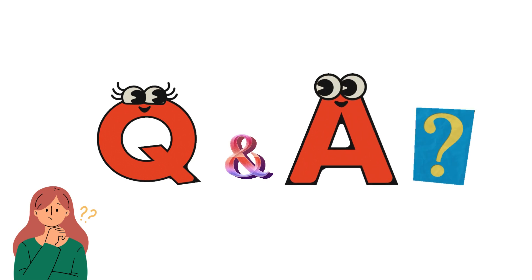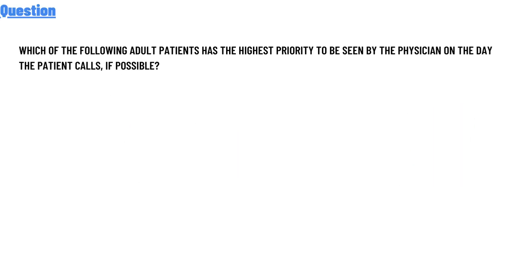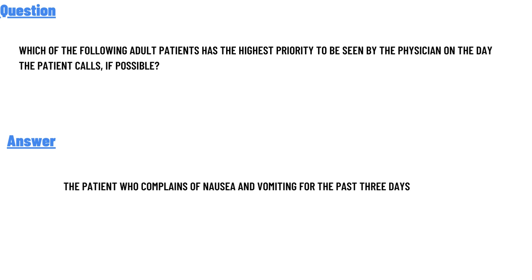Our today's question is: which of the following adult patients has the highest priority to be seen by the physician on the day of the patient call? The correct answer is the patient who complains of nausea and vomiting for the past three days. That's the answer to the question.